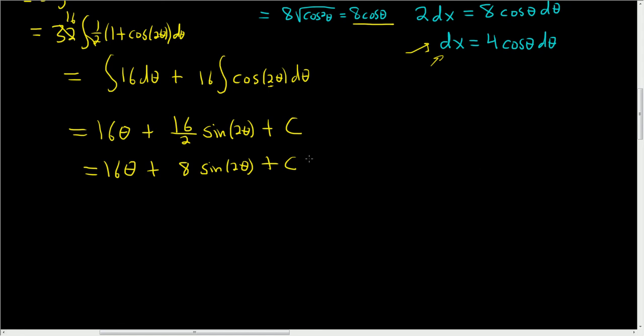Now we want to go back to x. But before we do that, we have to get rid of this 2 theta. So in order to do that, we'll use an identity. This is 16 theta plus 8, and we know that sine 2 theta is 2 sine theta cosine theta. So this is 16 theta plus 16 sine theta cosine theta plus c.